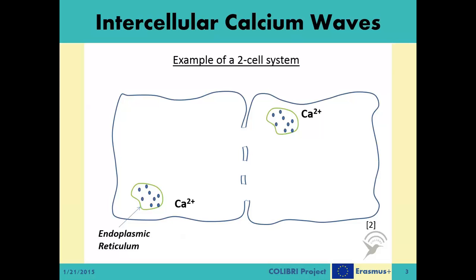Let us give an example of how the ICW mechanism works by considering a simple two-cell system. Based on some extracellular event or occurrence — for example an increase of the heat level in the environment — the cell is triggered. The cell reacts to the stimuli by a chain of chemical reactions, which end with the release of a specific type of molecules called the IP3s. Then, these IP3 molecules start diffusing inside the cell.